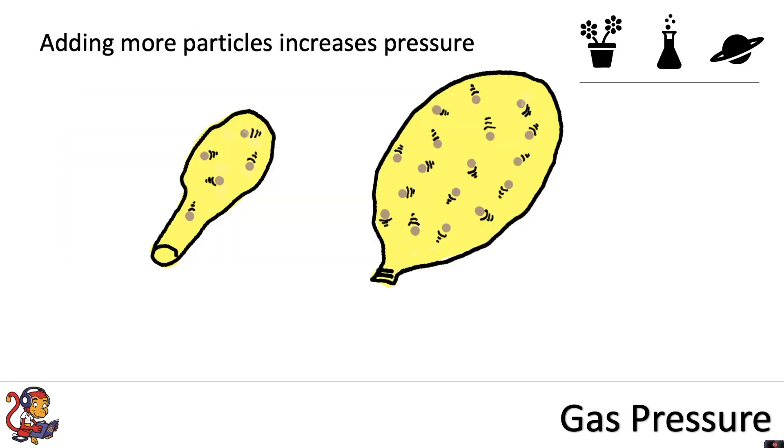Adding more particles increases pressure. So you can start off with the balloon at low pressure, with fewer particles inside, meaning a reduced rate of collisions with the outside wall.